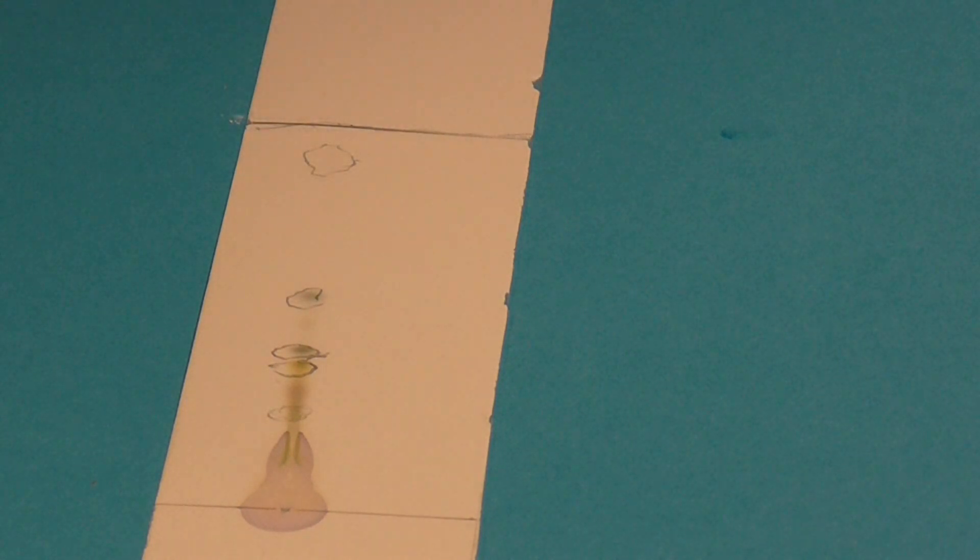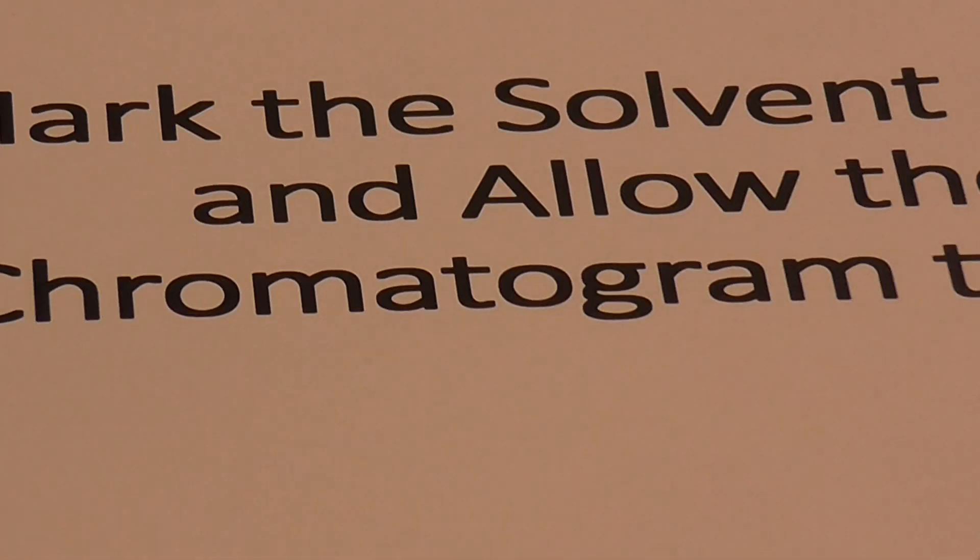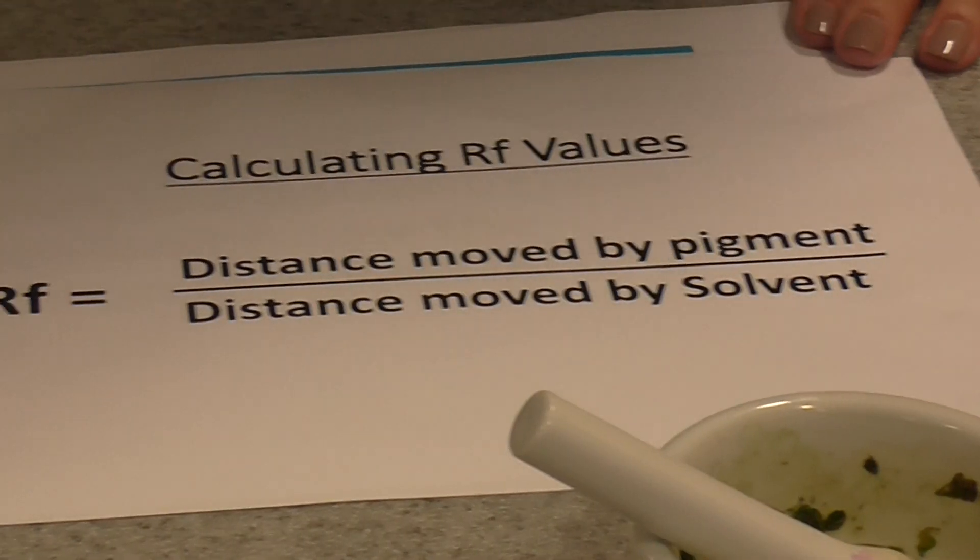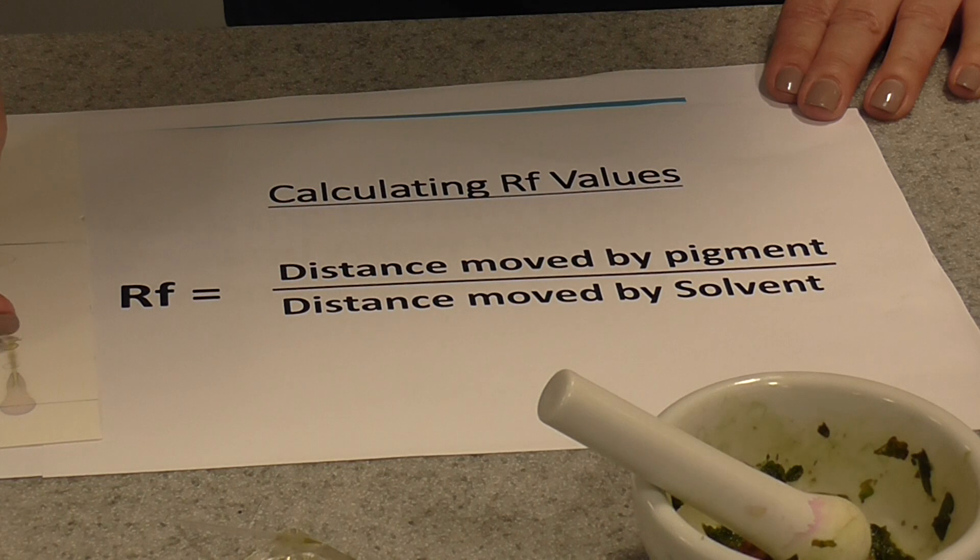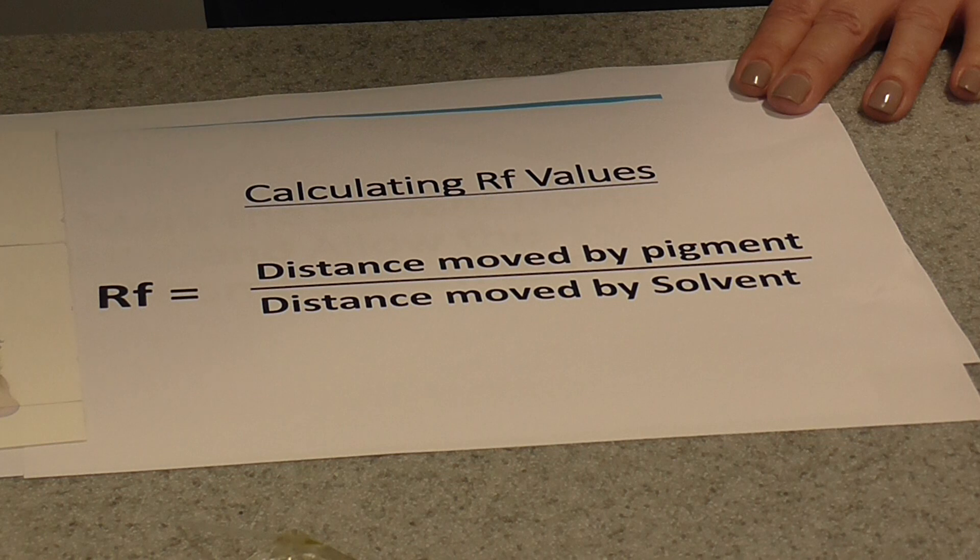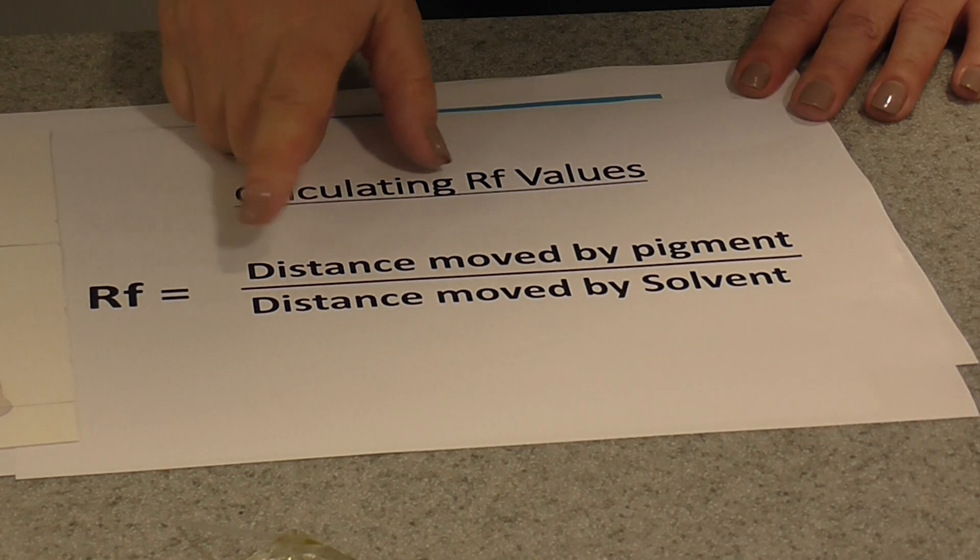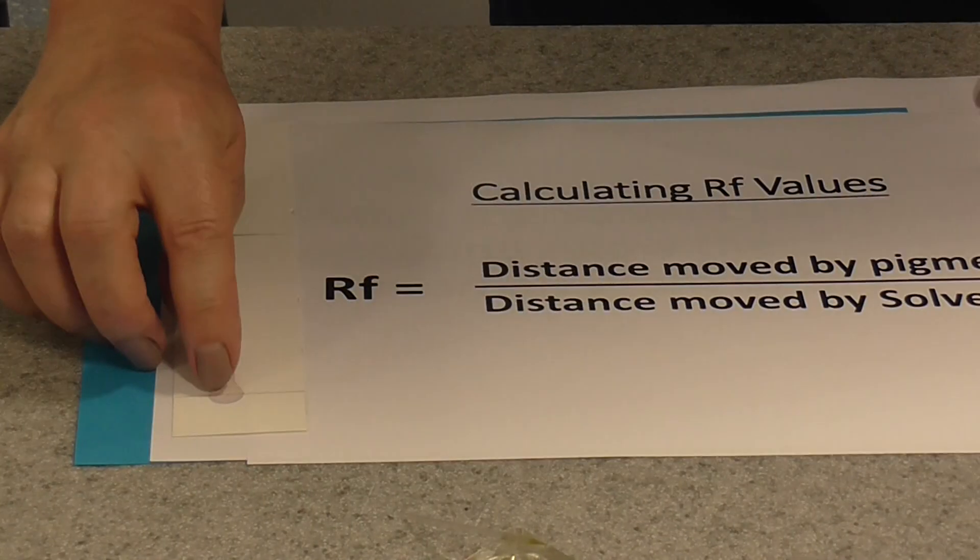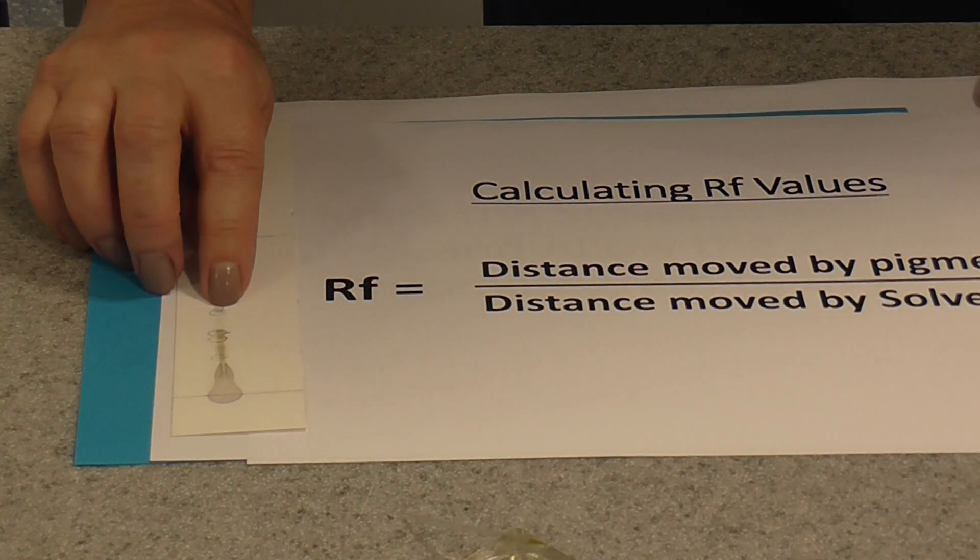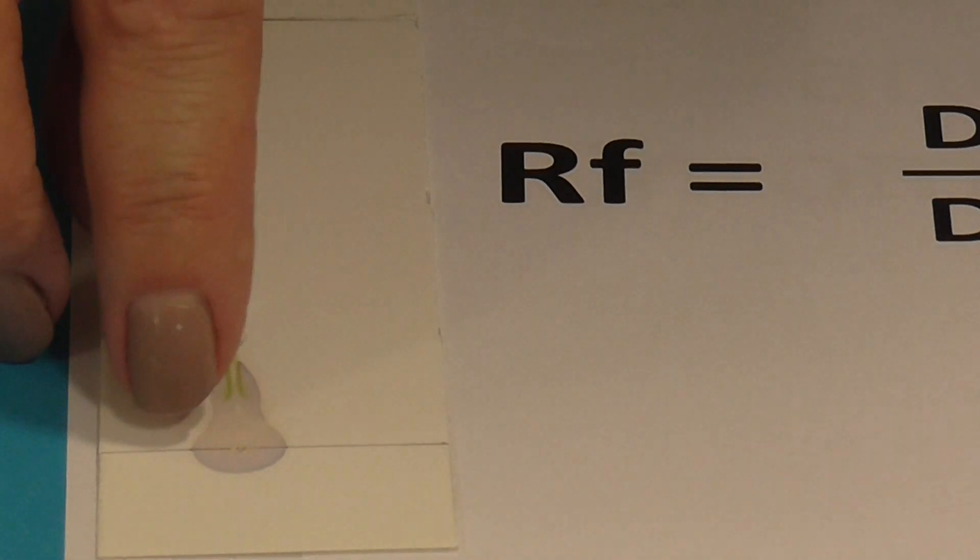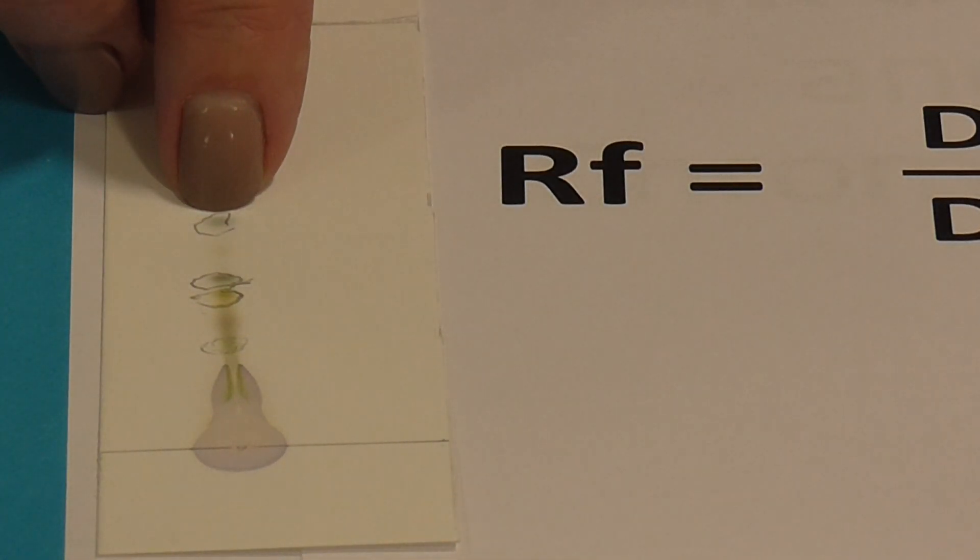Once you've allowed your chromatogram to dry, you can have a look at your spots and work out what they are. To do this, you have to work out an RF value for each patch of pigment on your chromatogram. To work an RF value out, it's very simple. It's the distance moved by the pigment. Get your ruler and measure to the farthest end of each pigment spot. We've got a kind of grey colored spot there. I would measure from the origin line where the pigment was applied at the beginning to the far end of the pigment spot.